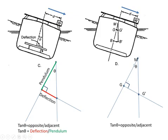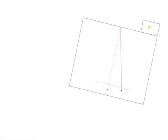Well, if tangent theta is opposite over adjacent, we can now define that as tan θ also equals GG', the shift of G, divided by the GM. And now you can see that these two formulas could be set equal to each other. Tangent of theta could be deflection over the pendulum, or tangent theta could be GG' over GM.